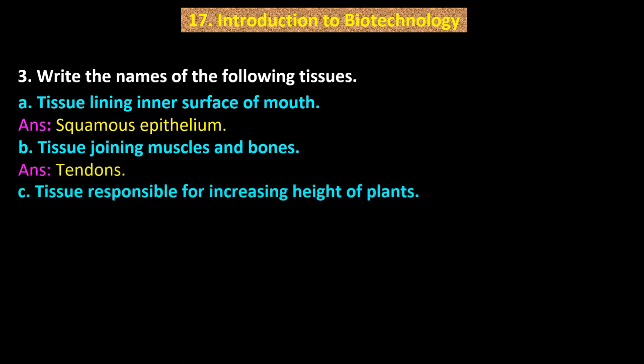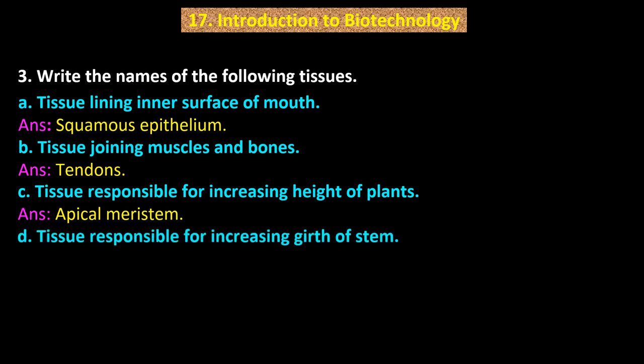C: Tissue responsible for increasing height of plants. Answer: Apical meristeme. D: Tissue responsible for increasing girth of stem. Answer: Lateral meristeme.